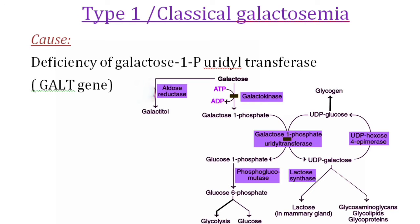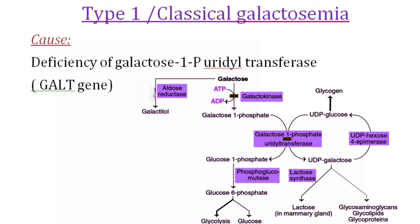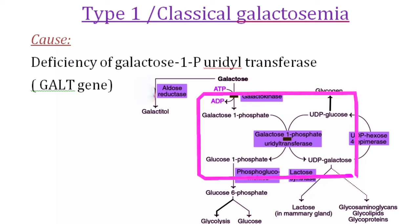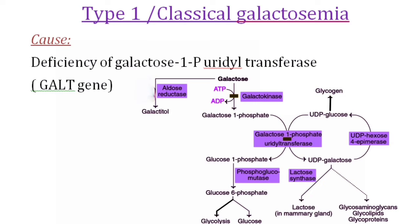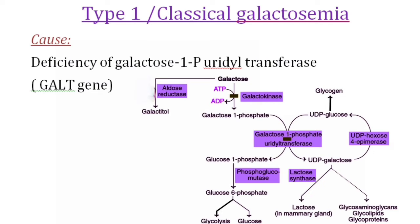Coming to type 1, or classical galactosemia, the cause is deficiency of an enzyme called galactose-1-phosphate uridyl transferase. This enzyme is required for the conversion of galactose-1-phosphate into UDP galactose and glucose-1-phosphate. This is the severe form of galactosemia because of the toxic effect of galactose-1-phosphate. The enzyme deficiency is due to a mutation in the GALT gene, which codes for galactose-1-phosphate uridyl transferase.